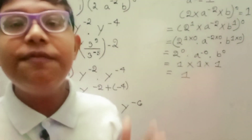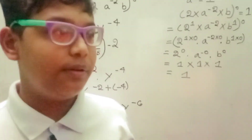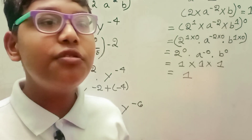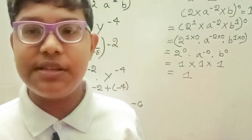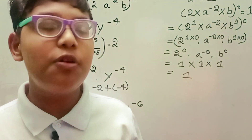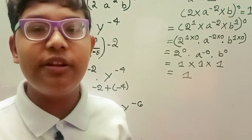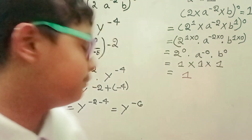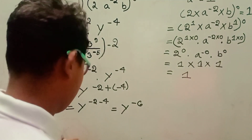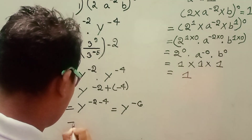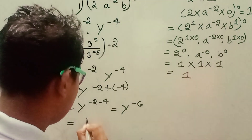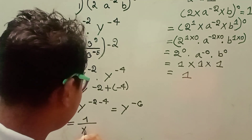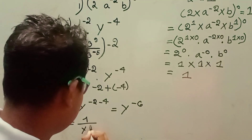Negative exponent: if a negative exponent is introduced upon a base, the exponent will be positive upon the reciprocal of the base. So y to the power minus six equals one by y to the power six.